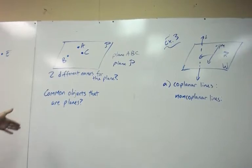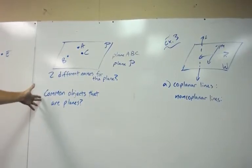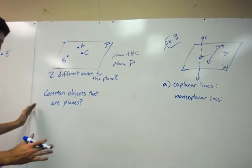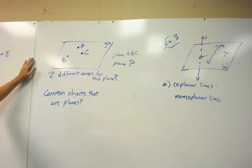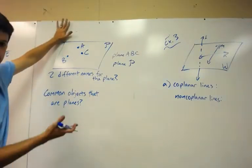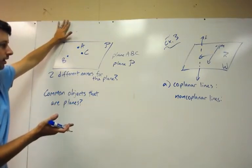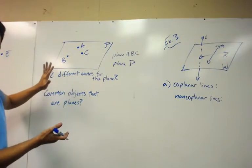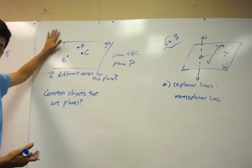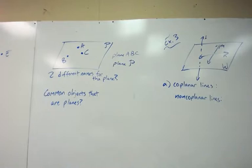And just real quick, some common objects that are planes, just to make planes a little easier to understand. Some common objects that are planes, well, one would be this wall right here. This whole wall is a plane. The floor is a plane. Now, notice the wall and the floor, those are separate planes. One is going down, one's going horizontal. So you can have planes going in different directions, and they can extend forever.